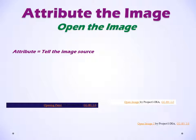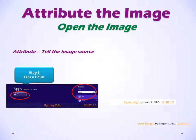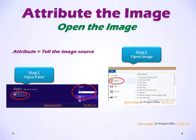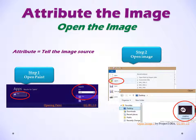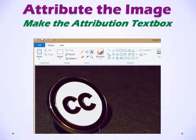We need to attribute the image. We're going to open the image. Attribute means to tell the image source — to tell where it came from. Step 1, open Paint. Step 2, open the image. Now we're going to attribute the image and make the attribution text box so we can write on the image.